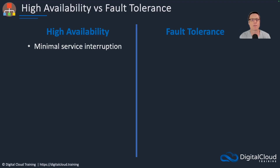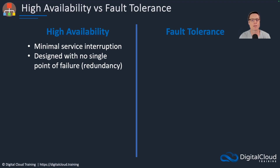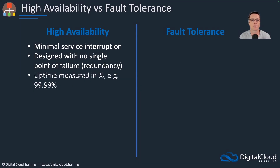High availability refers to ensuring that we have minimal service interruption for our applications or services. Whatever we're running on AWS, we want to make sure that it's available for use as much of the time as possible. Therefore, we need to design with no single point of failure. We can assume that things are going to fail even on AWS, so we have to make sure we build in redundancy.